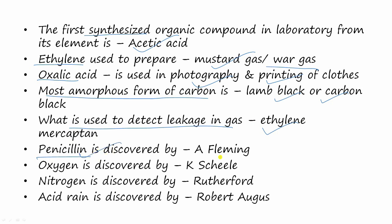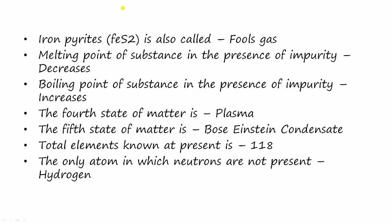Penicillin was discovered by Alexander Fleming. Oxygen was discovered by Carl Scheele. Nitrogen was discovered by Rutherford. Acid rain was discovered by Robert Angus Smith. Iron pyrites is also called fool's gold.